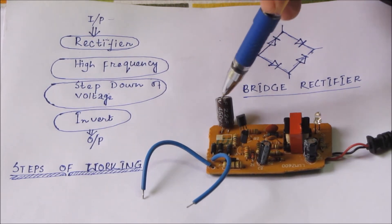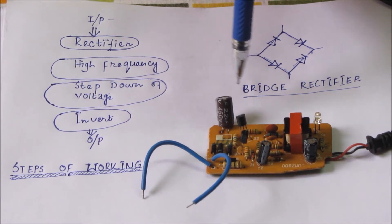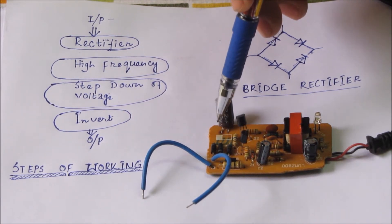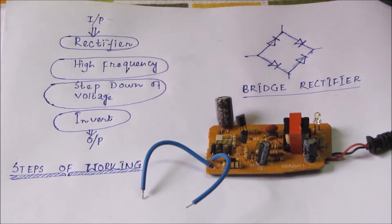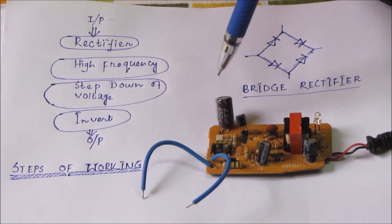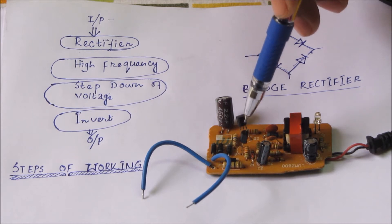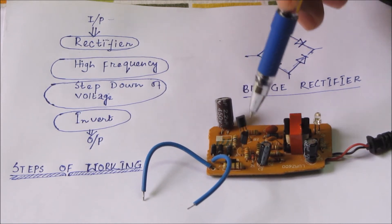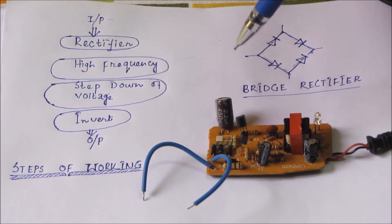After rectification, the DC signal has some ripple. To get a ripple-free DC signal, a 2.2 microfarad, 450 volt capacitor is placed. The DC is passed through this capacitor to get rid of the ripple. After passing through that 2.2 microfarad capacitor, the signal comes to these two transistors.